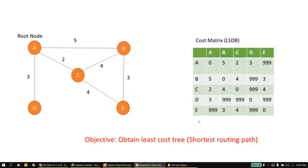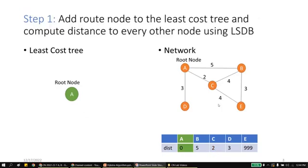The objective is to obtain the least cost tree, that is, the shortest routing path. Let us understand the steps of Dijkstra's algorithm. In Step 1, add the root node to the least cost tree. We build the least cost tree starting with root node A. Add root node A and compute the distance to every other node using the database. Wherever a node is not directly connected, we put the distance as infinity, that is 999.